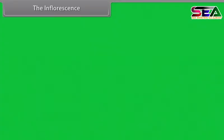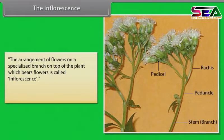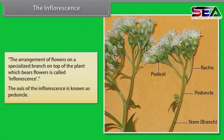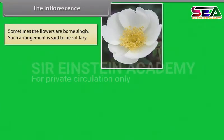The inflorescence is the arrangement of flowers on a specialized branch on top of the plant which bears flowers. The axis of the inflorescence is known as peduncle. Sometimes the flowers are borne singly; such arrangement is said to be solitary.